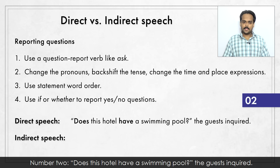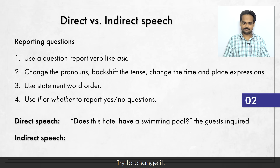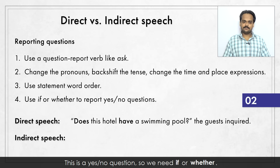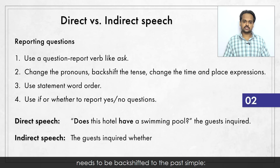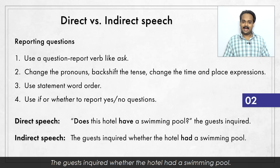Number two: "Does this hotel have a swimming pool?" the guests inquired. This is a yes or no question, so we need "if" or "whether". The guests inquired whether the hotel had a swimming pool. The question is in the present simple tense, so it gets backshifted to the past simple. You could also say "that hotel" instead of "the hotel".